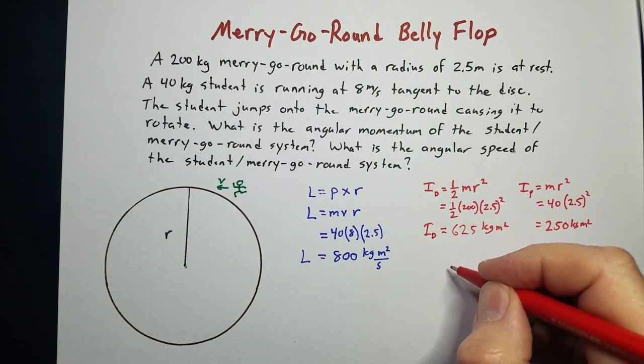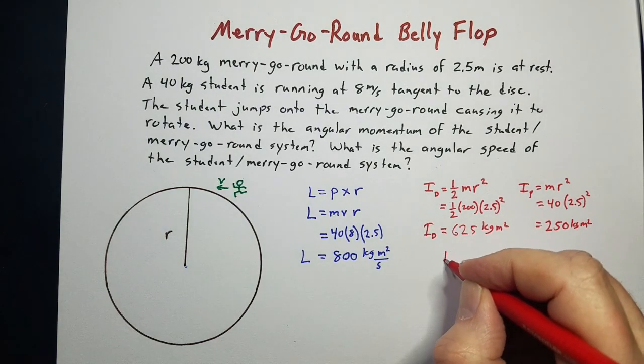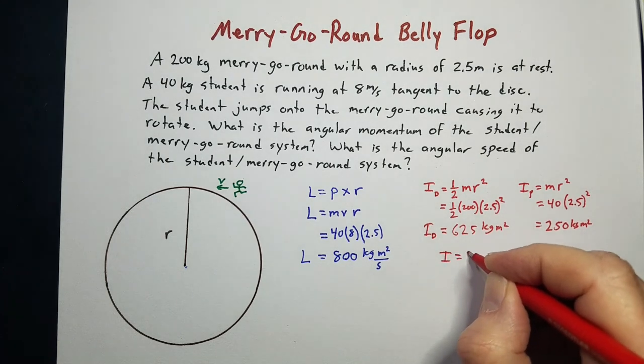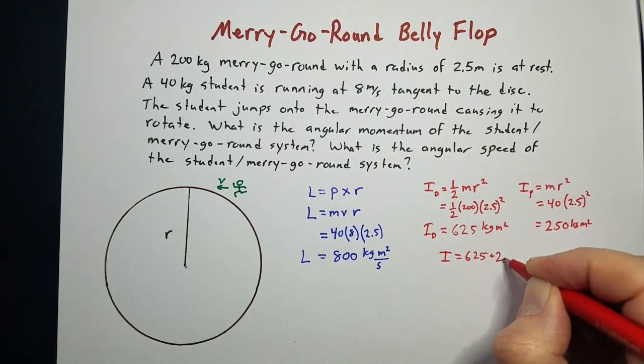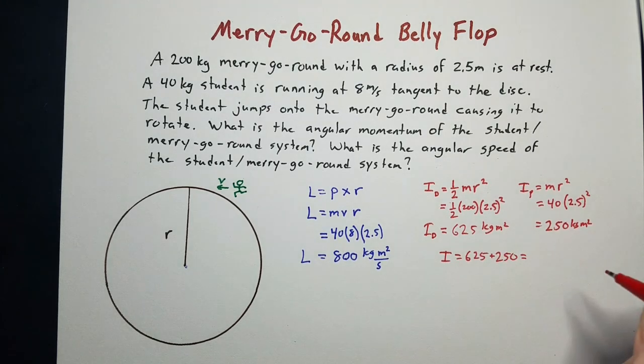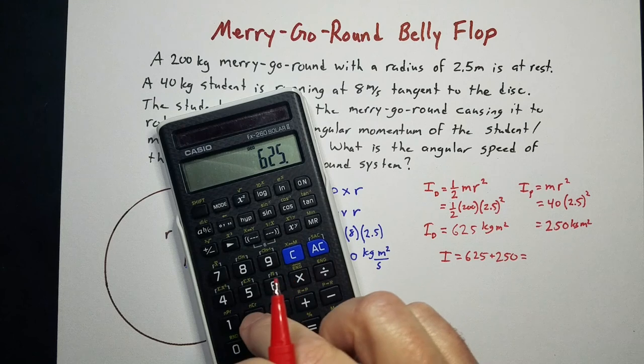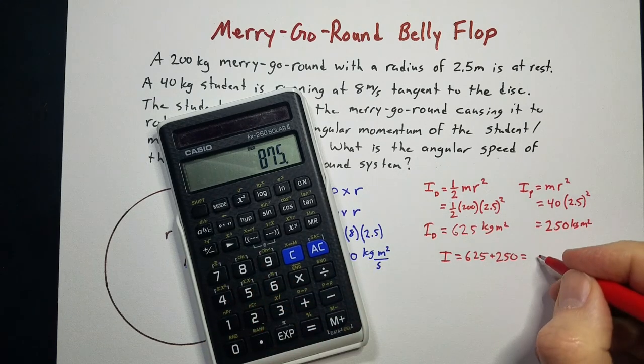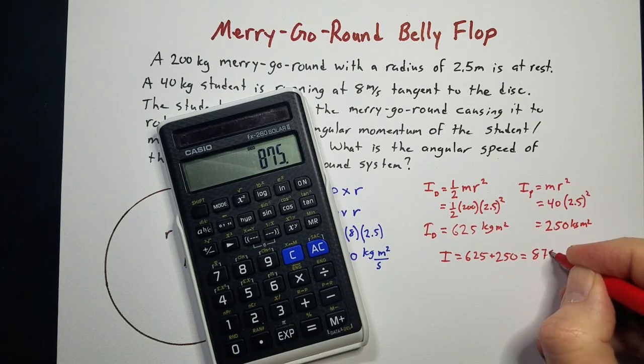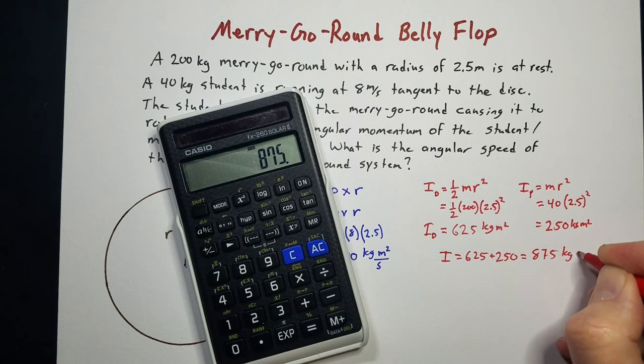The total moment of inertia of our system would just be those two added together. So 625 plus 250 equals 875 kilogram meters squared.